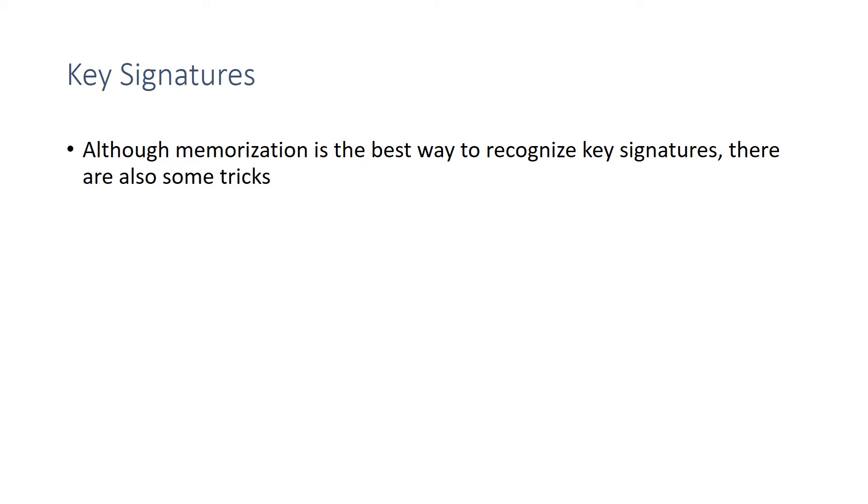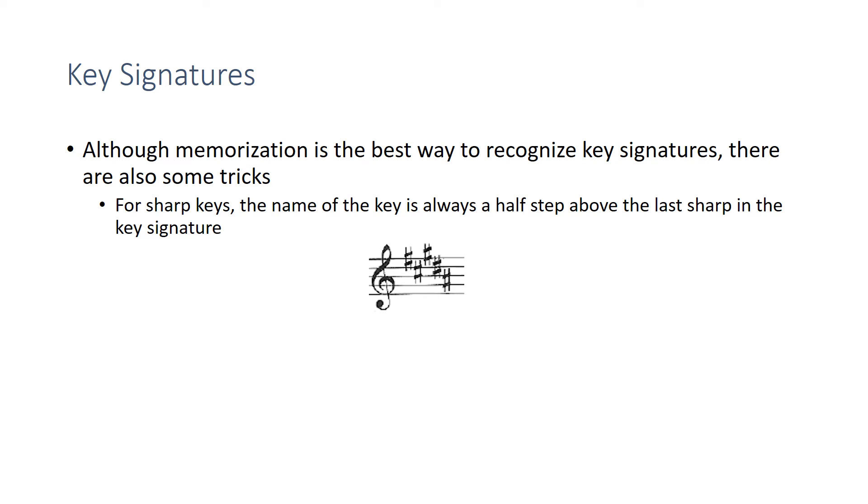The best way to recognize key signatures is to obviously memorize them. There really aren't that many to memorize, but there are also some tricks you can use to identify them quickly, especially the ones with more accidentals. For sharp keys, the name of the key is always going to be a half step above the last sharp in the key signature. So in this key signature, the last sharp is A sharp, so a half step above A sharp is B. This is the key signature of B major.